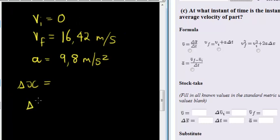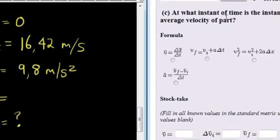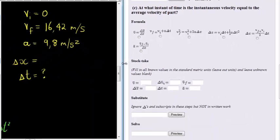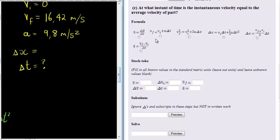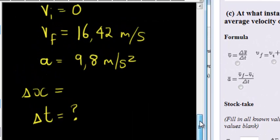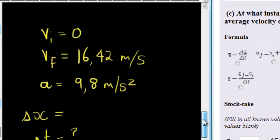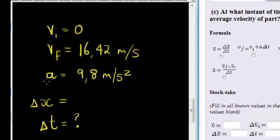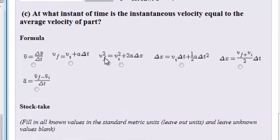And the change in time is actually what we're trying to work out. At what instant of time? Now with that in mind, let's find the correct formula. We want a formula with initial velocity, final velocity, acceleration and time. And here we go: initial velocity, final velocity, acceleration and time. That's the correct formula.